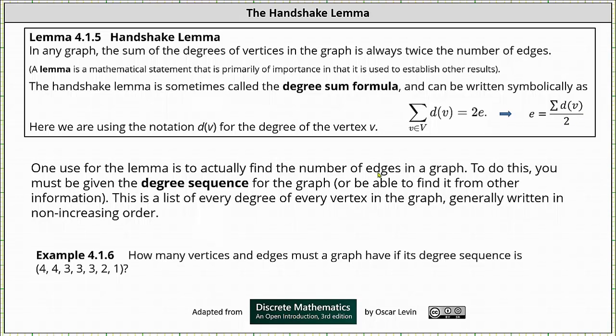One use of the lemma is to actually find the number of edges in a graph. To do this we must be given the degree sequence for the graph or be able to find it from other information. The degree sequence is a list of every degree of every vertex in the graph generally written in non-increasing order.